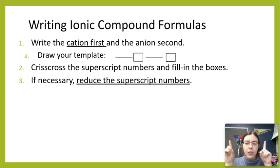Next, we're going to crisscross the superscript numbers to fill in the boxes. So the charges that we write up top with the ions, we swap them, and they go to the opposite element. And then if necessary, we're going to reduce the superscript numbers. So if we have two and two in our box, we can reduce that to one and one.